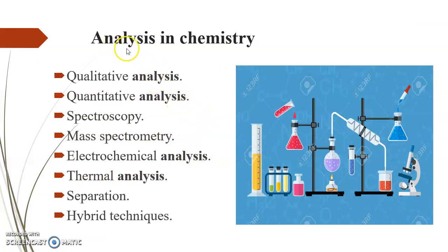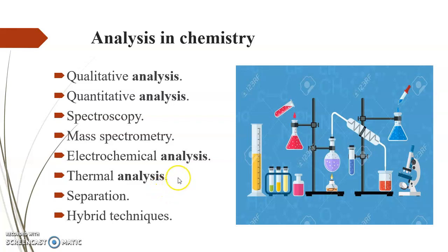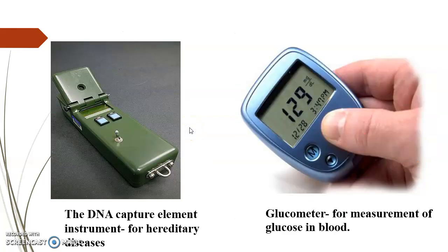What do we do in a chemistry lab? We analyze either qualitatively or quantitatively. It could be through spectroscopy or electrochemical analysis, thermal analysis, but ultimately we will be estimating quantitatively or qualitatively. So here we are going to club both the sensors and analysis.